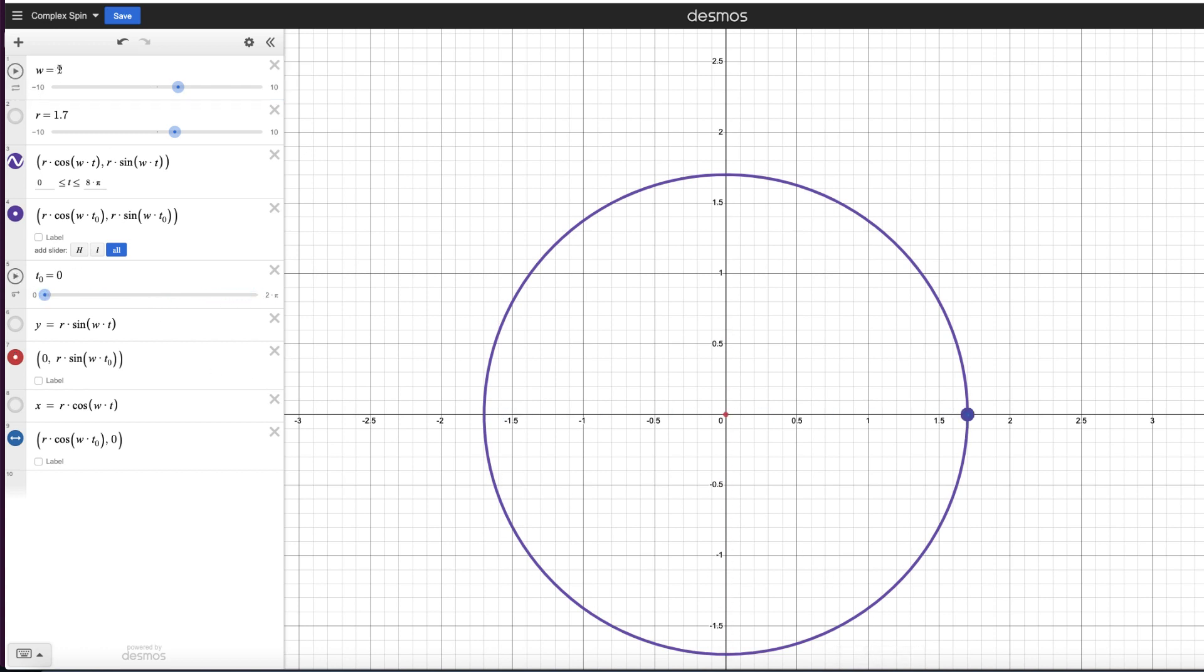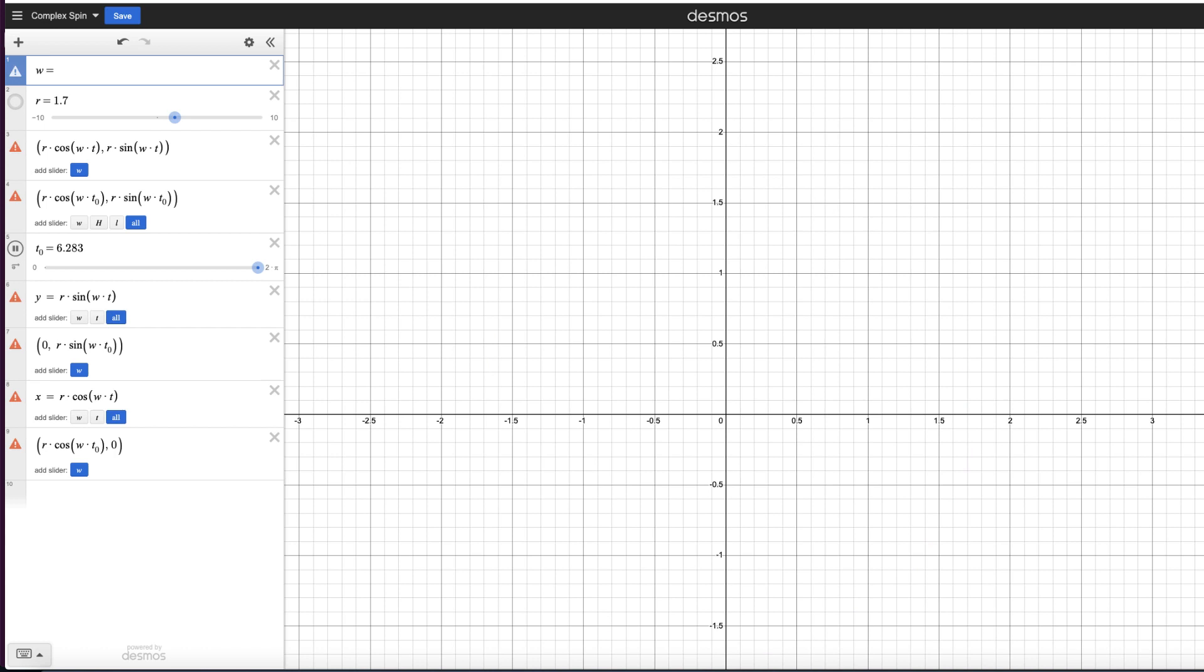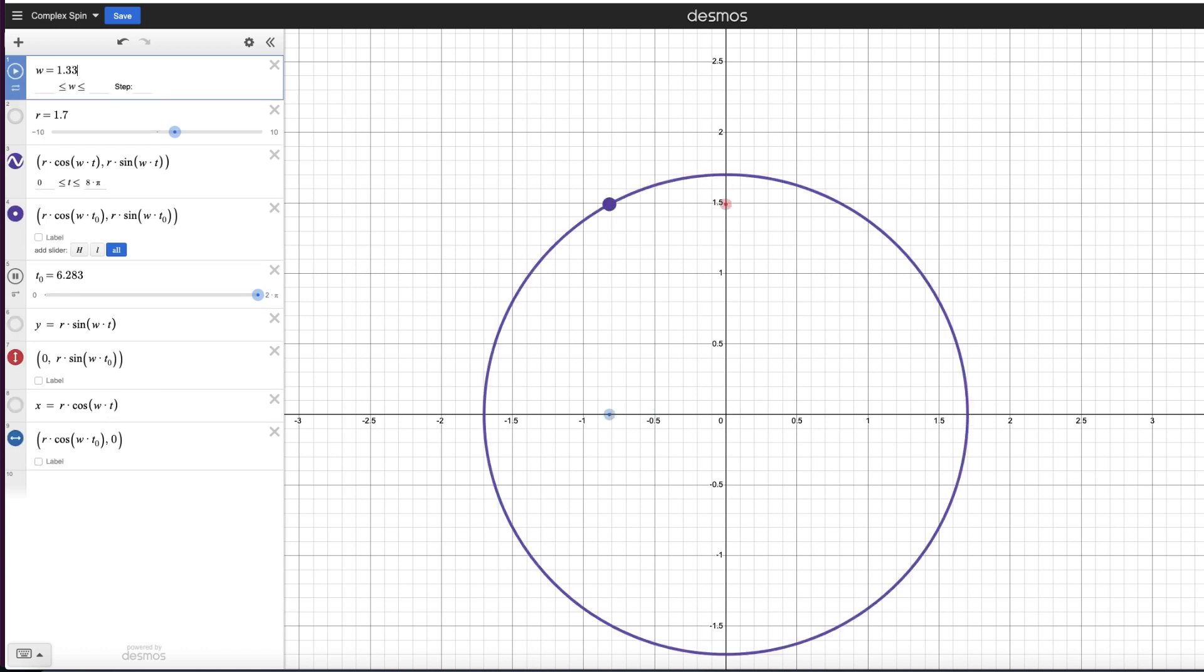Similarly, if I decrease this to 0.5, it will only make it halfway around the circle from 0 to 2π. And we can have some fun with this—for instance, we can make this 1.333 or something like that. As we go from 0 to 2π, we make it around the circle once and then about a third of the way around.